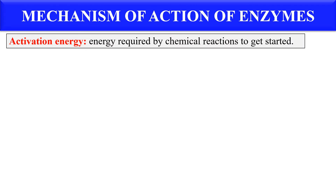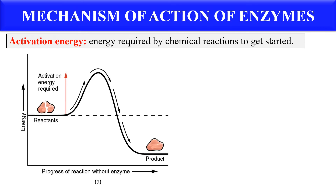First of all, how enzymes work. For this you should know about activation energy. Activation energy is the energy which is required by any chemical reaction to get started — it is the minimum energy required for the reaction to proceed. In this diagram you can see these are the reactants, and if they are converted into the product they have to pass this energy barrier. This is the activation energy, and without enzyme this activation energy is more for the substrate or reactant to cover.